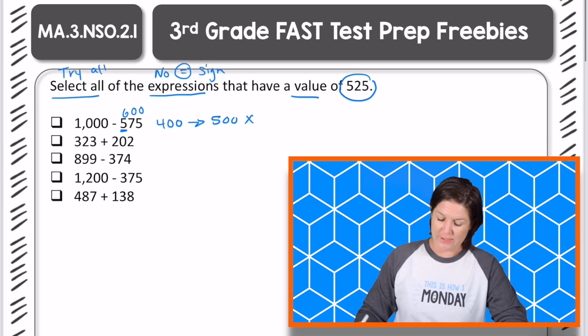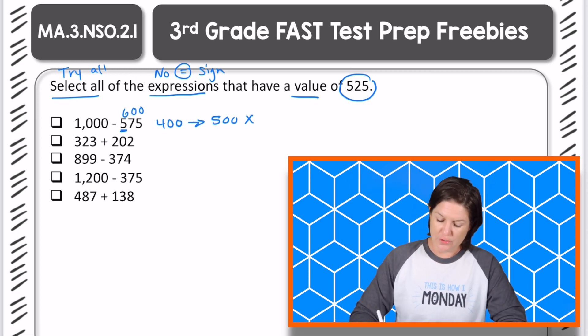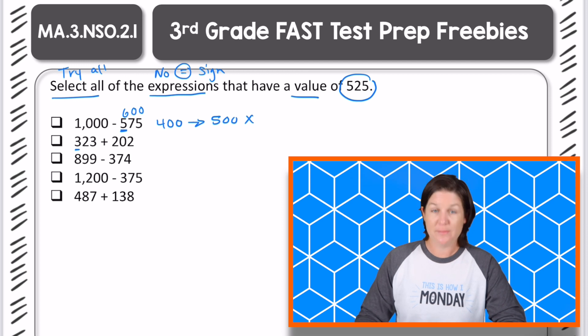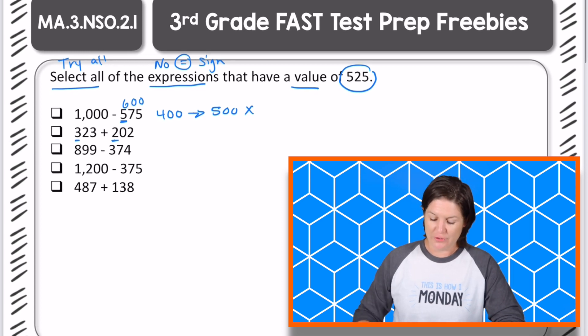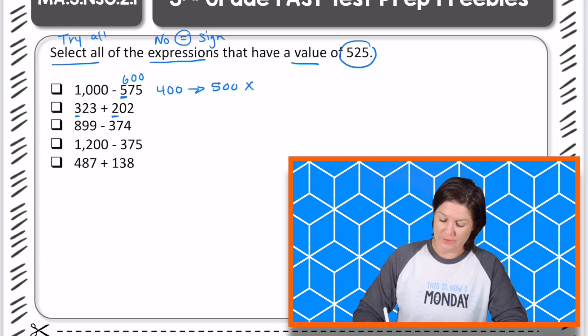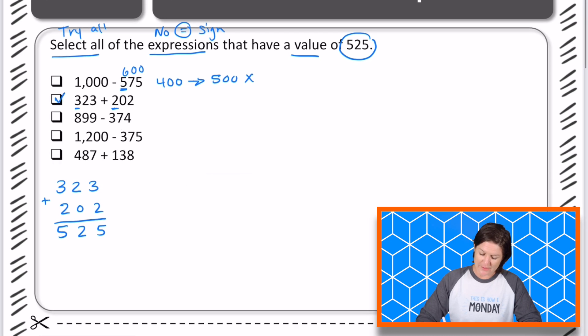Let's go to the next one. It says 323 plus 202. So just using mental math, I've got approximately 300 plus 200, and that's pretty close to 500. So I'm going to go ahead and actually solve this one out just to make sure. 323 plus 202, and we get 525, which it does contain that value. So yes, this is an answer choice. Let's go ahead and mark that one.